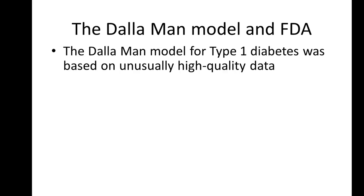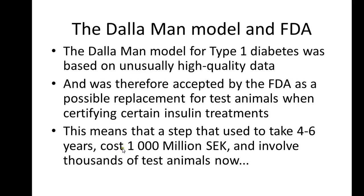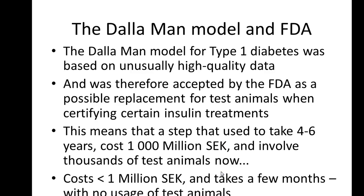Let's look at an example: the Dalaman model and the FDA — the Food and Drug Administration in the US. The Dalaman model was developed for type 1 diabetes and was based on unusually high quality data. Because of this high quality data and the associated mathematical modeling, the model could be accepted by the FDA as a possible replacement for test animals when certifying certain insulin treatments. This means a step that used to take four to six years, cost 1 billion kronor, and involve thousands of test animals now costs less than 1 million kronor, takes only a few months, and requires no test animals — a major improvement also in terms of ethical issues.